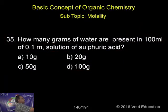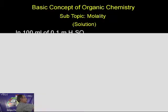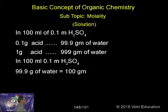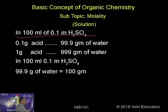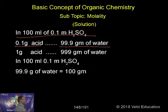Let me calculate. We already know this formula — I have just written it. Now, in 100 mL of 0.1 m sulfuric acid, 0.1 grams of acid in 100 mL means...